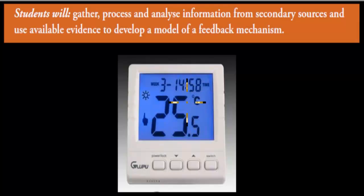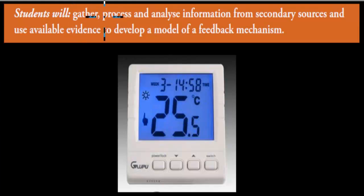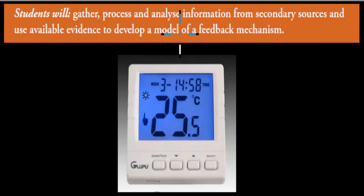Welcome back. In the last video we talked about the role of the nervous system when it comes to detection and response. In this video we're going to cover something which is somewhat related. The dot point says students will gather, process and analyze information from secondary sources and use available evidence to develop a model of a feedback mechanism. So in this dot point what you actually have to do is model the feedback mechanism.